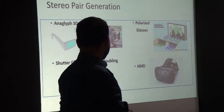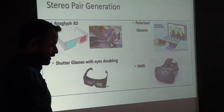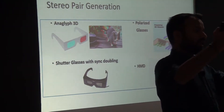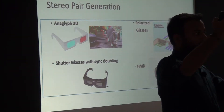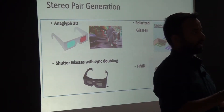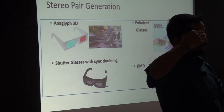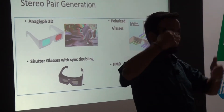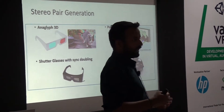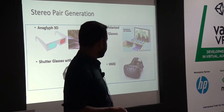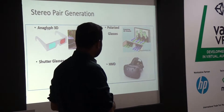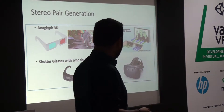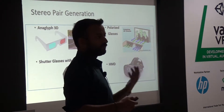There is also something called shutter glasses. A display alternately produces a left image and then a right image, and at the same frequency the left shutter and right shutter open, so you see the left image with your left eye and the right image with your right eye, forming a stereo pair and giving you depth perception. The latest method is HMDs, and we'll see how HMDs produce depth perception and the underlying technologies involved.